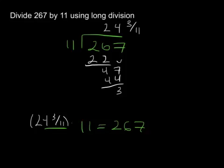That means you're taking 11, multiplying it by 24, and then adding 11 times 3 elevenths. Why is that? Because 24 and 3 elevenths is saying 24 plus 3 elevenths. And that is going to be 267.